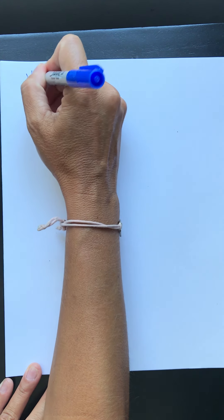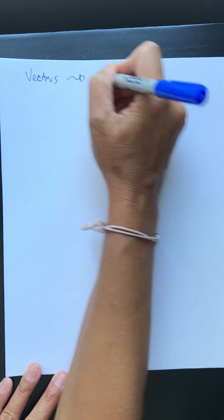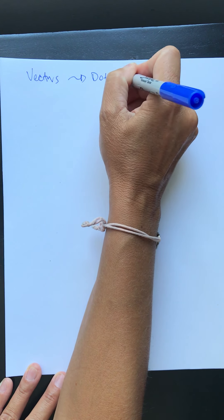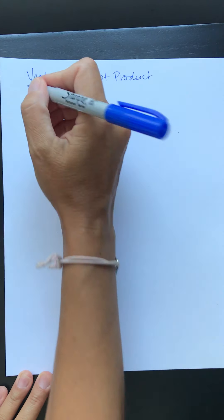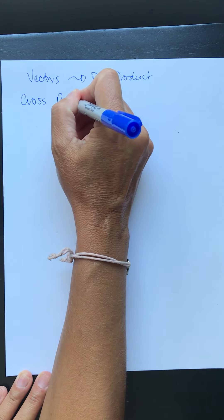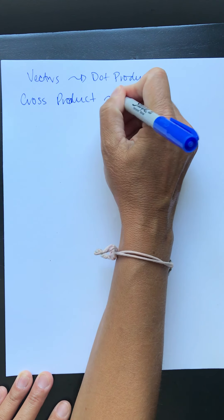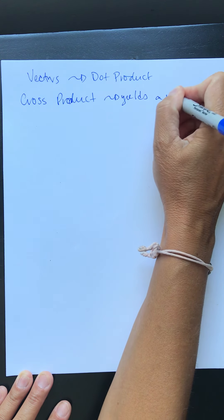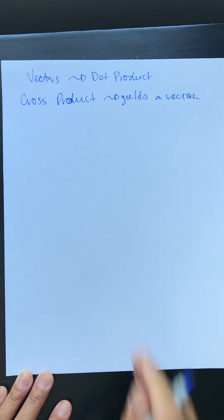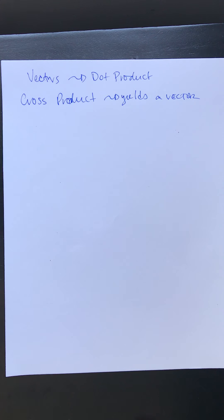So we've talked about vectors and we've already introduced the dot product. What does the dot product yield? Everyone shouts in the background a scalar! Well today's operation is called the cross product and it yields a vector. Now we can only cross vectors in three space and you will see why as we start to work with them, but you need three dimensional vectors to find a cross product.